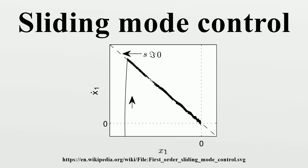In control systems, sliding mode control, or SMC, is a non-linear control method that alters the dynamics of a non-linear system by application of a discontinuous control signal that forces the system to slide along a cross-section of the system's normal behavior. The state feedback control law is not a continuous function of time. Instead, it can switch from one continuous structure to another based on the current position in the state space.